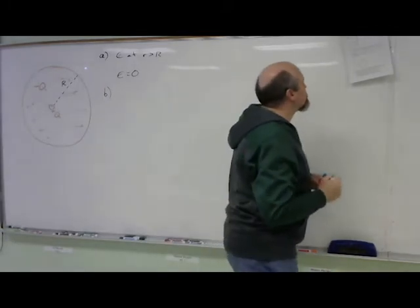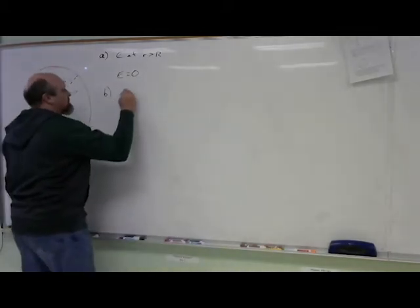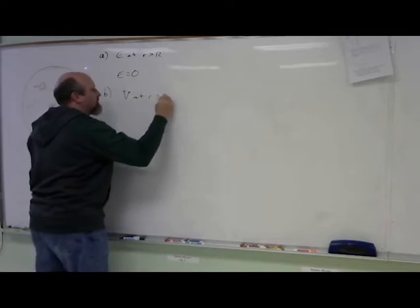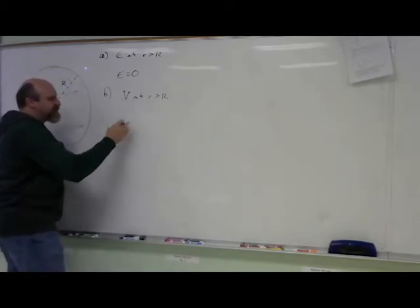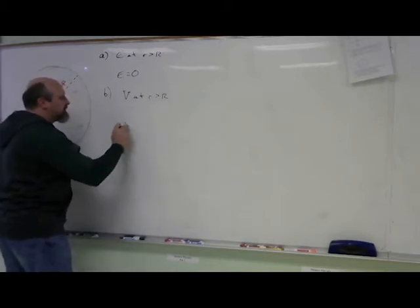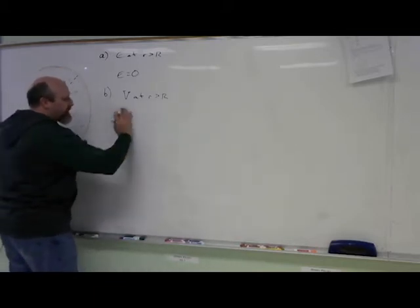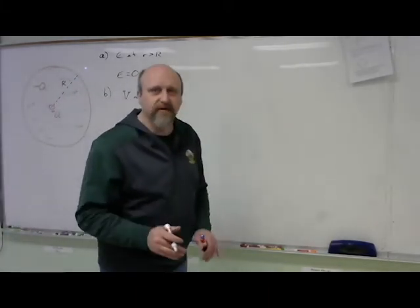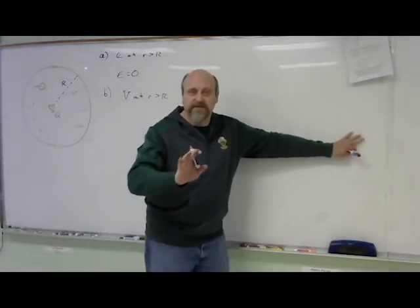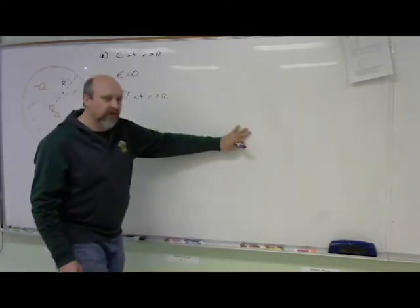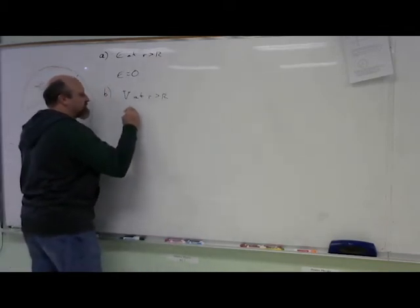Part B: find the electric potential V outside the sphere. V at r greater than R. If there's no field out here to push against, there's no change in electric potential energy from placing a charge here versus here versus here. There's no field to push against, so there's no change in potential energy per charge. Moving around outside, the V value should be constant. We know at infinity V is defined to be zero. Since it doesn't take any work to push a charge outside — there's no field — everywhere out here V is zero.